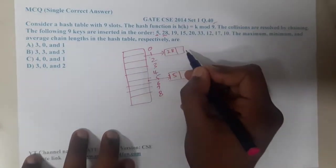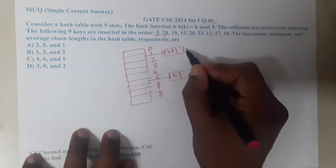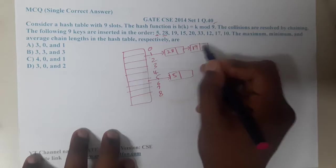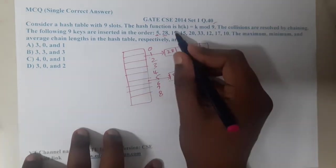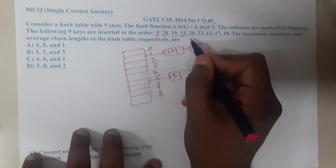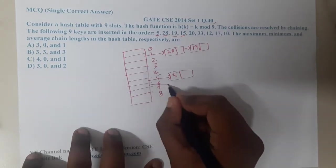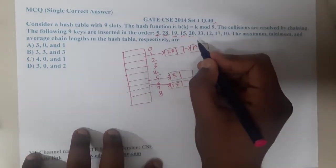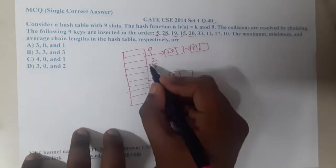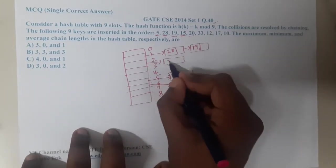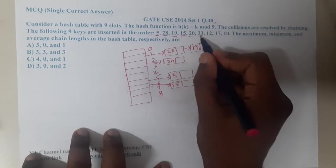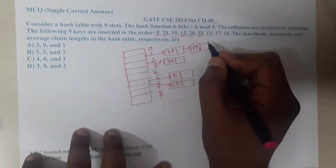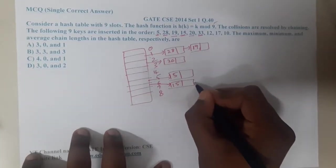Similarly, 19 mod 9, which is nothing but again 1, because 18 plus 1. Similarly, 15 mod 9 is nothing but 6. Moving on to 20, so 20 mod 9 which is nothing but 2.